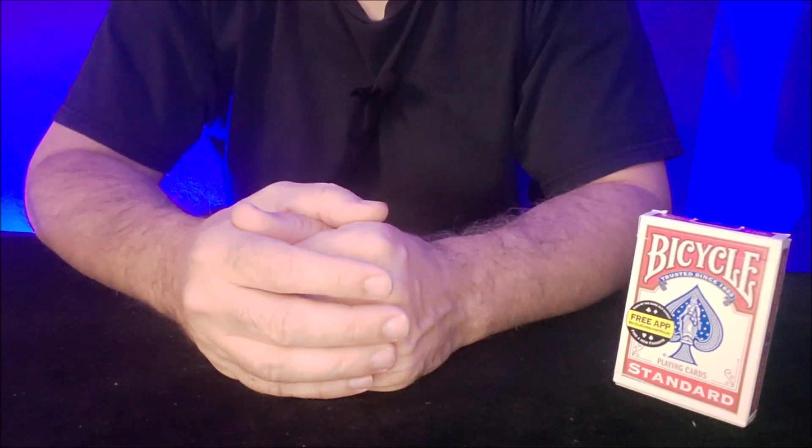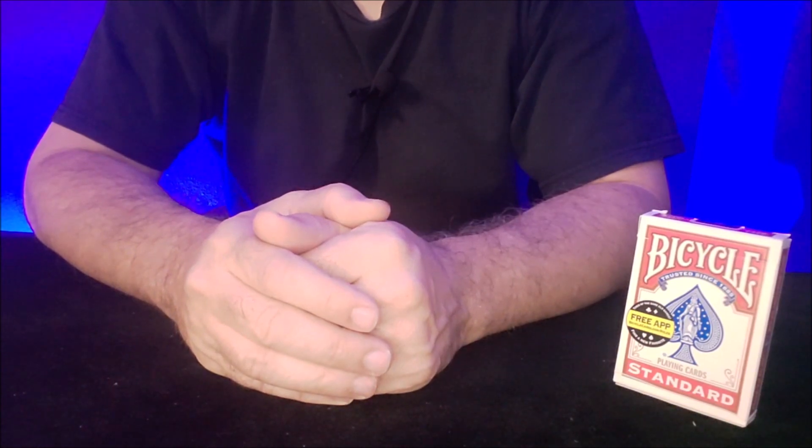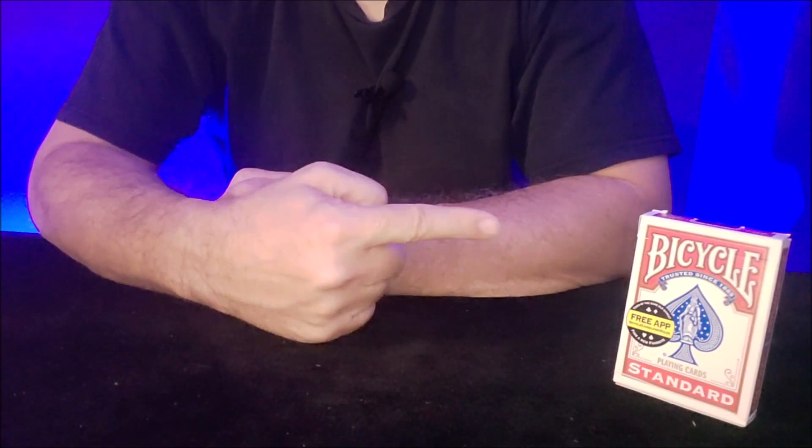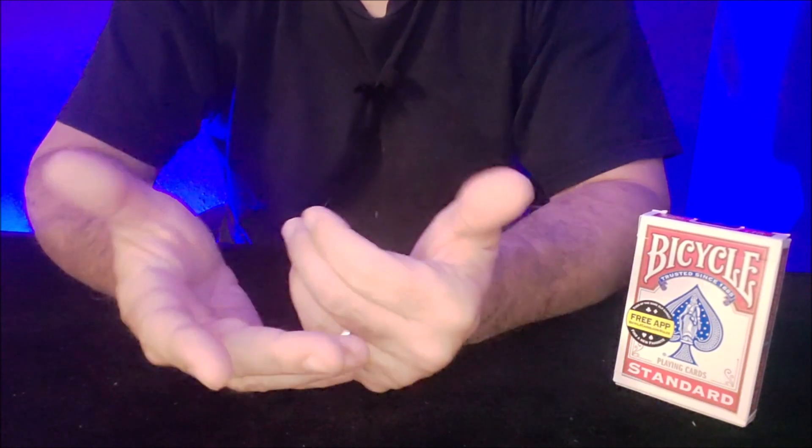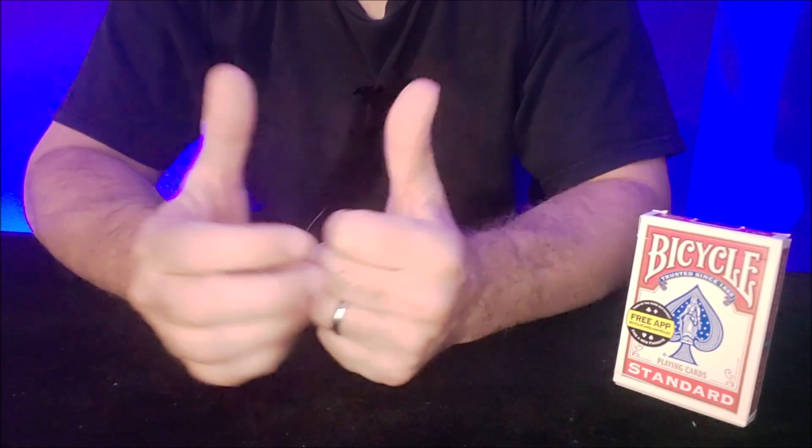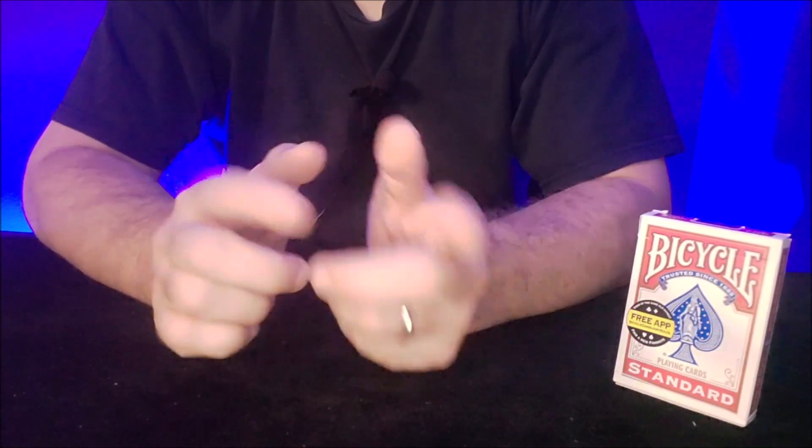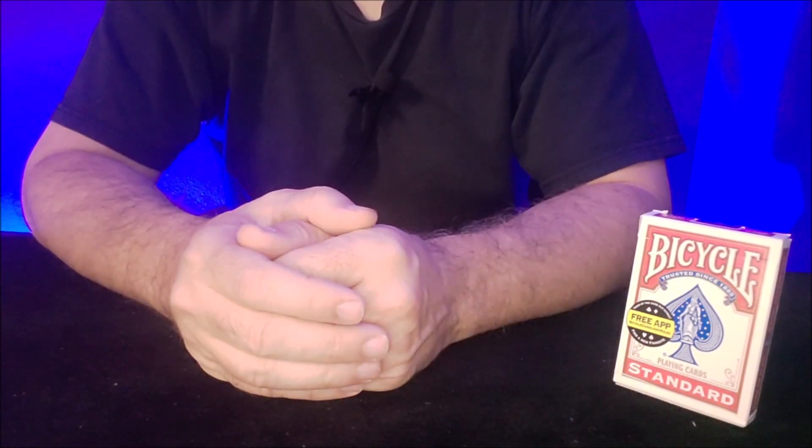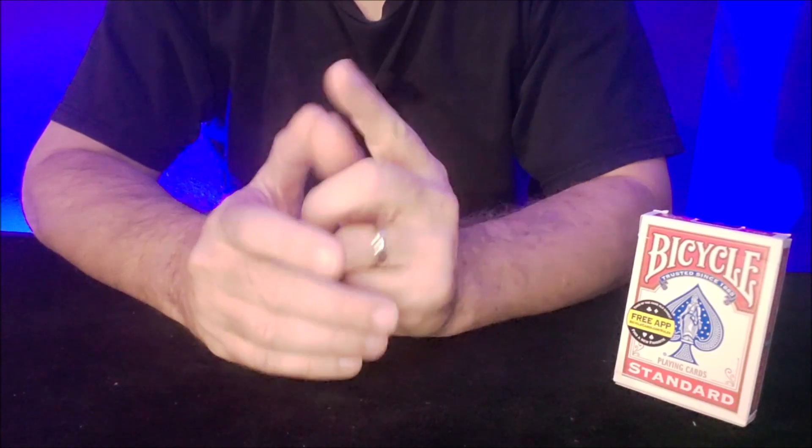Now, what does that mean? Well, sometimes when a trick is self-working, it means we have done some early setup. We've pre-arranged the playing cards in such a way that the deck works for us. Of course, that makes the trick easy, but it also puts the burden of proof on us that the cards were shuffled. And I'll teach you a false shuffle, and I'll teach you the setup, and I promise you when you learn this trick, you'll have a lot of fun with it.